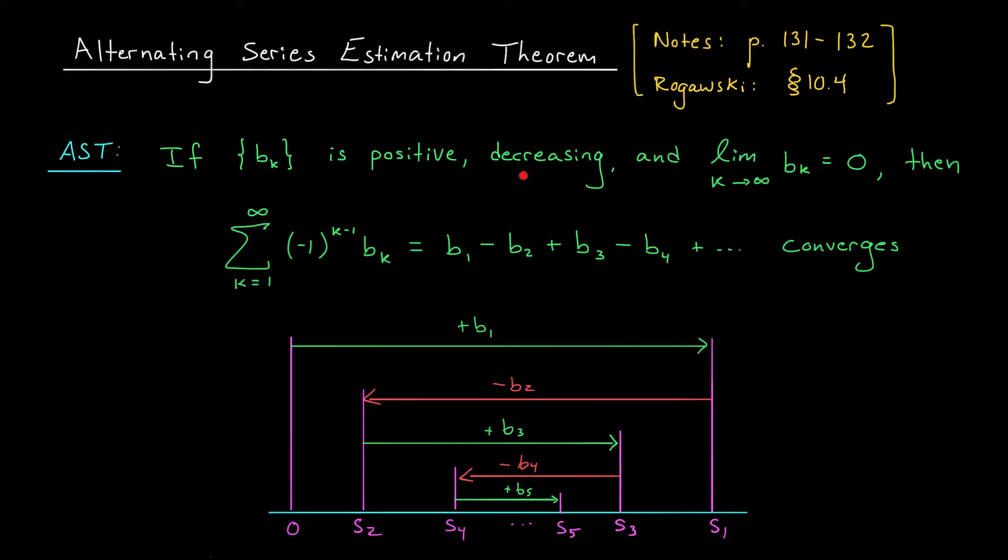So, the terms bk are positive, decreasing, and tend to 0. Suppose as well that we want to estimate the true value of this sum using our third partial sum, s3. How close is this approximation? Well, we know that the true sum has to lie somewhere between s3 and s4, which means the biggest the error could possibly be is this quantity, b4.